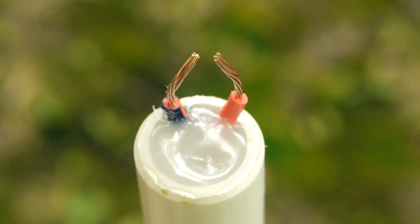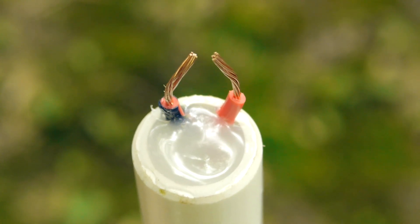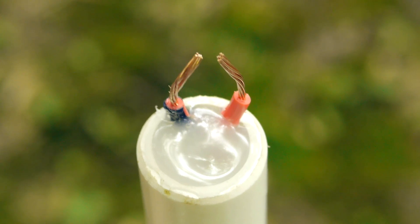The exposed ends should be adjusted until a spark can easily jump across the gap when the igniter button is pressed.